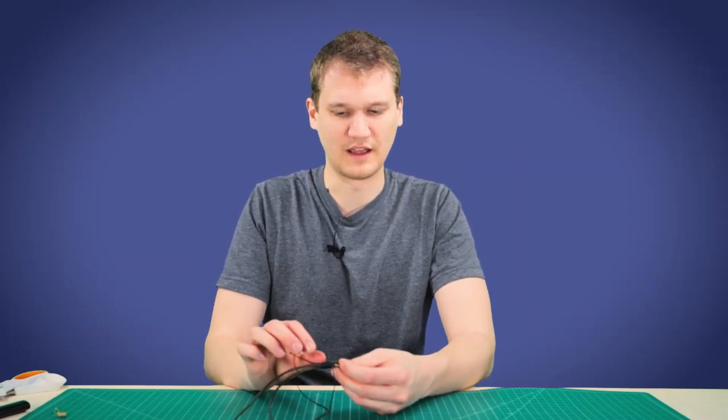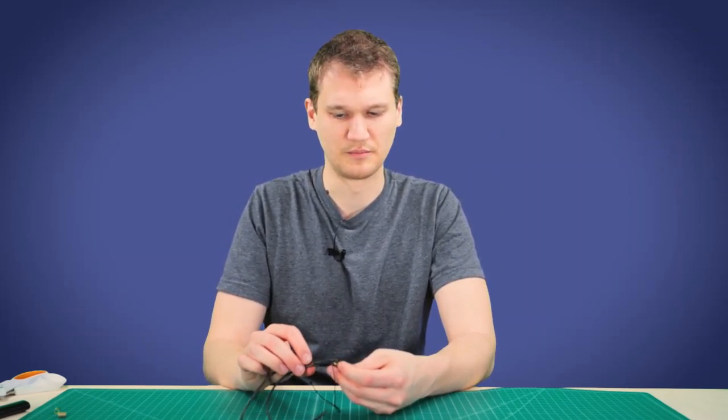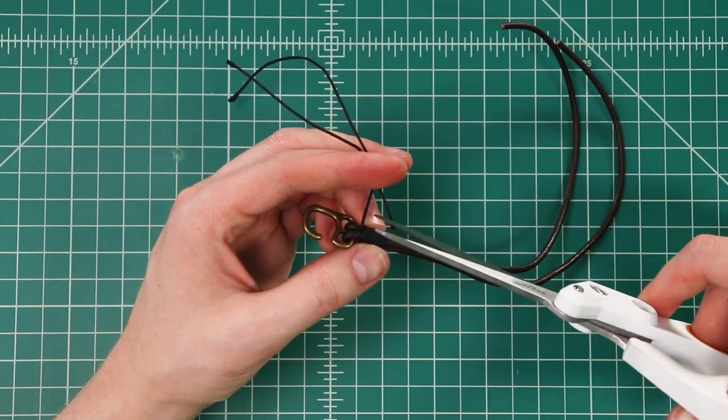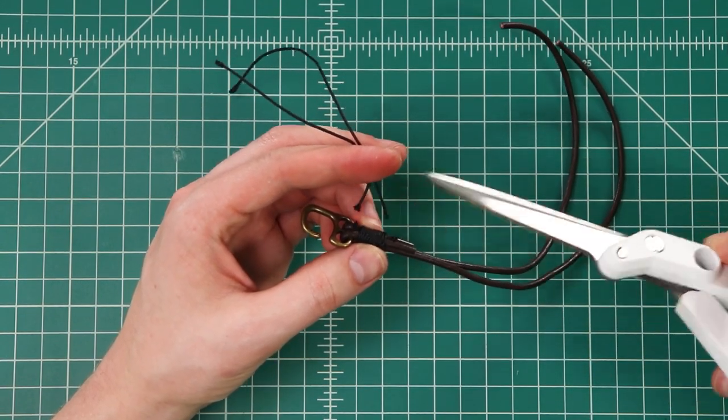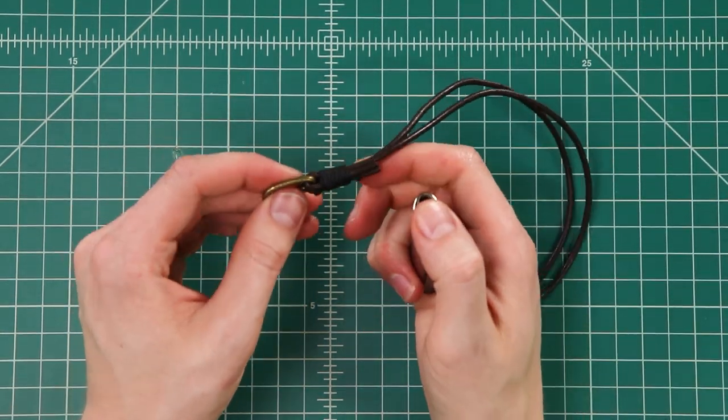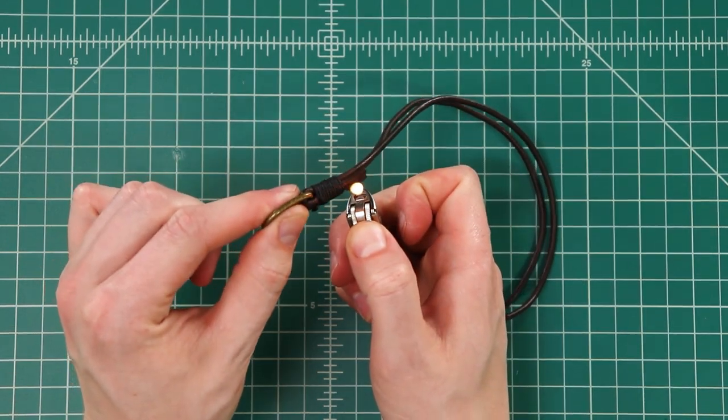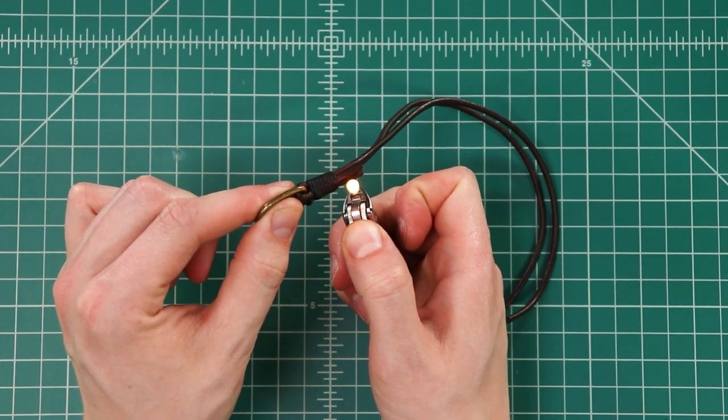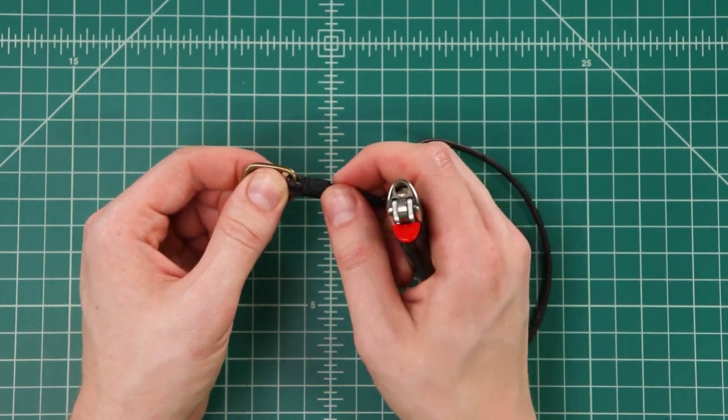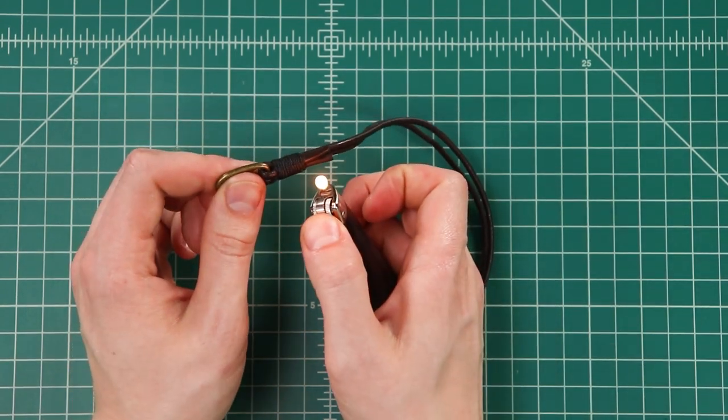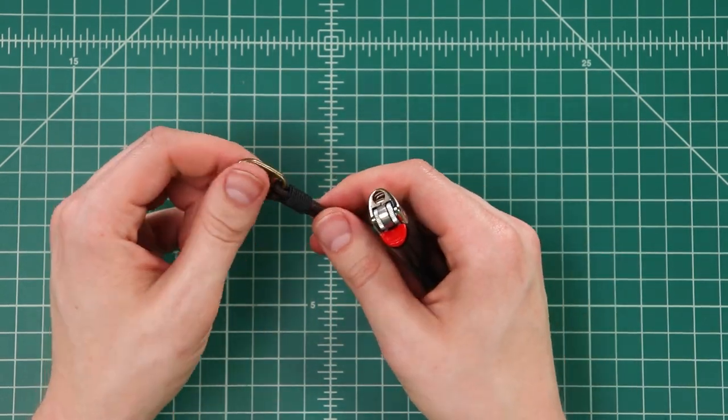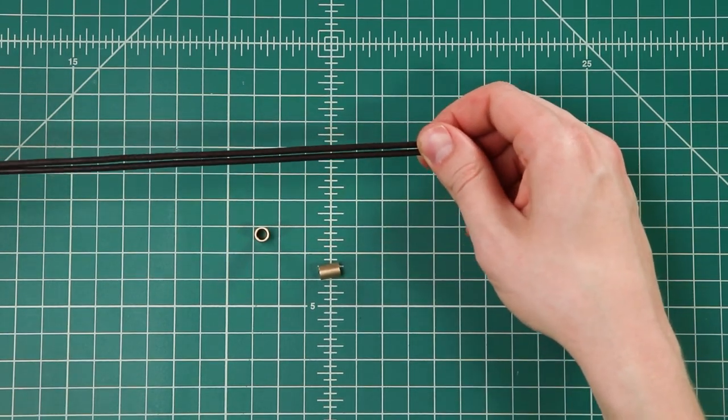And now we can clip both of those ends and melt them down just to kind of hide them. I'm just going to cut those about an eighth of an inch from the bracelet. And that leaves just enough to grab my lighter and melt down the ends. And while those are still melted, you can kind of push them up against your knot. Because it's black it blends in pretty well. Alright, so there's our finished whipping on one end.